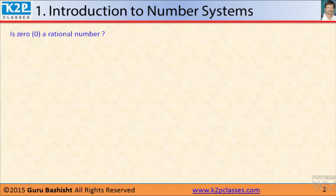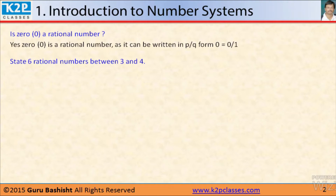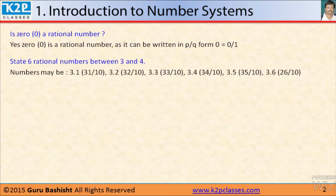Is 0 a rational number? Yes, 0 is a rational number, as it can be written as 0 by 1. State 6 rational numbers between 3 and 4. There are infinite rational numbers between 3 and 4. Between any two rational numbers, there are infinite rational numbers and irrational numbers — in fact, between any two numbers. Numbers may be 3.1, 3.2, 3.3 and so on.